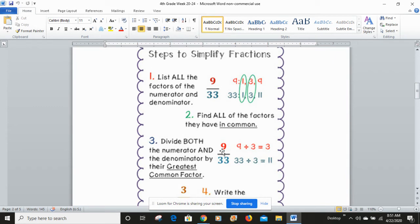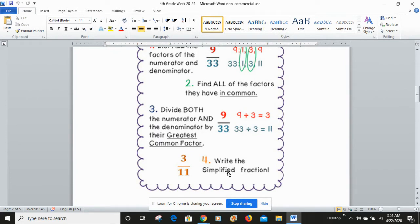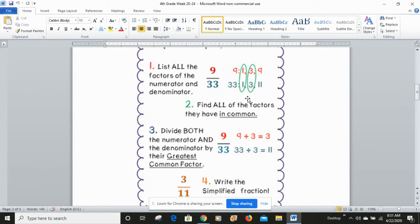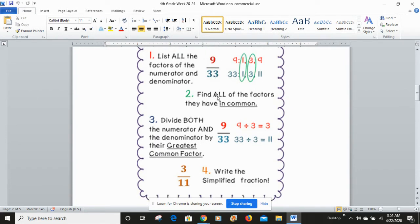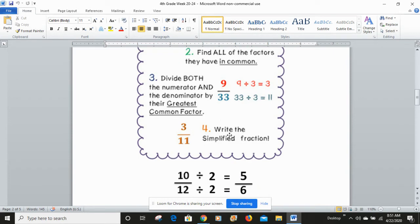So we go down here, and we take 9 and we divide that by 3, and 33 divide that by 3, and our answer would be 3/11. So write the simplified fraction. So 9 over 33 in simplest form is 3/11. Okay?